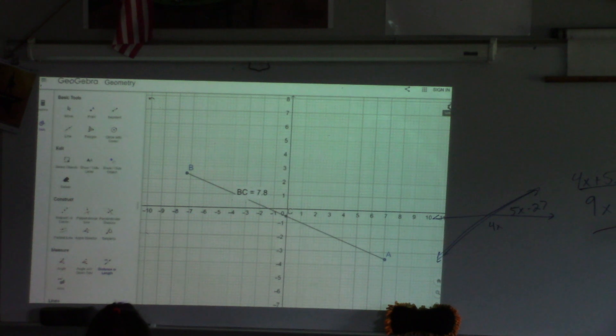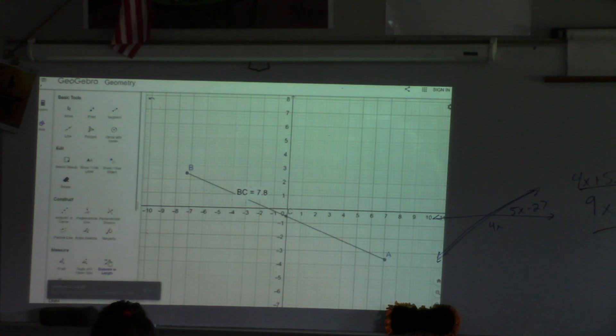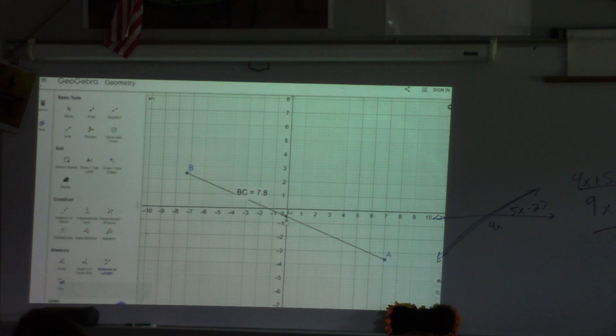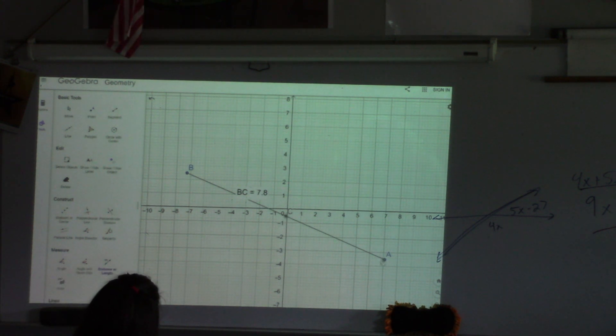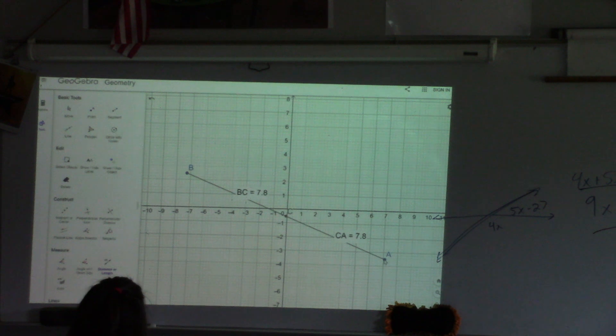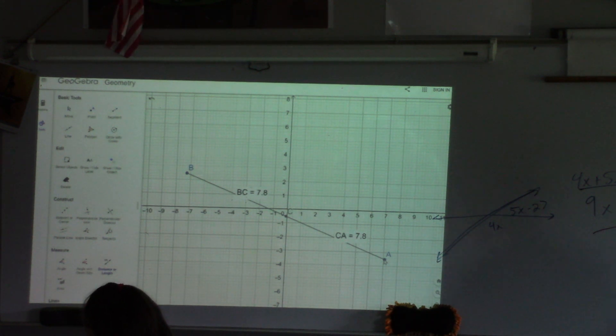So BC is equal to 7.8. All right. So then let's check. So what should be the length from C to A? 7.8 as well. And whatever it is for you, it should be the same. Hey, 7.8.